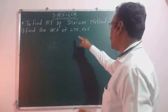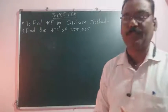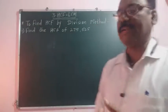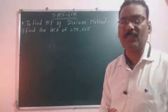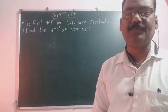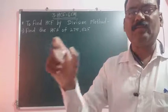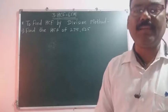Find the HCF of 275 and 525. The first step is to divide the bigger number by the smaller number. Let us see now.